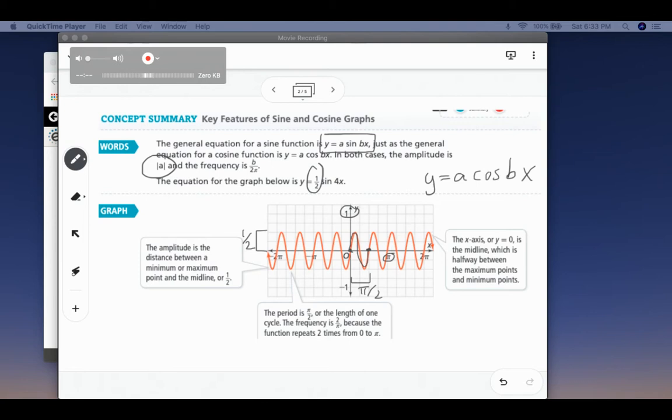So our period is pi over 2, and our amplitude is a half. The period comes from, we're going to take 2 pi, because that's the period of our parent function in this case, divided by our b value. So our b value is 4, so that's where the pi over 2 came from. We're going to look more at that when we do some specific examples.